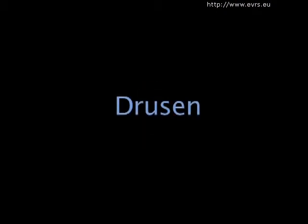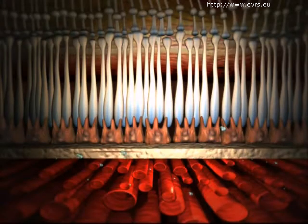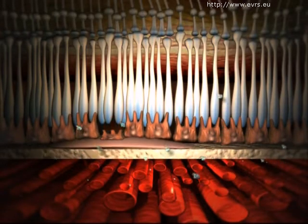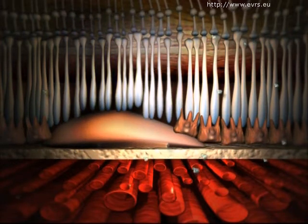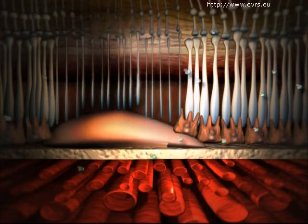First, drusen formation, which are intra-retinal deposits perceived as small scotomas. The patient has difficulty discriminating letters, eventually has difficulty reading an entire word inside a phrase.